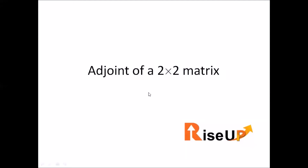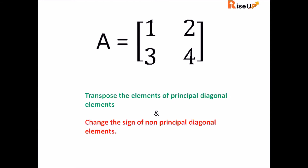In this video, you will learn how to find the adjoint of a 2x2 matrix in just one second. This is our 2x2 matrix. These are called principal diagonal elements and these are called non-principal diagonal elements.